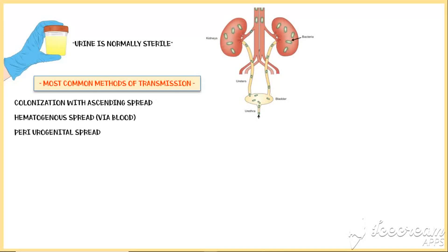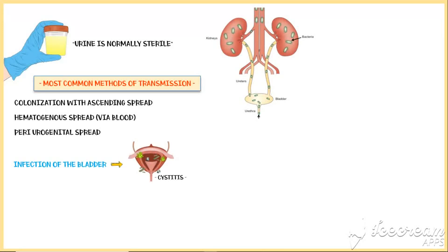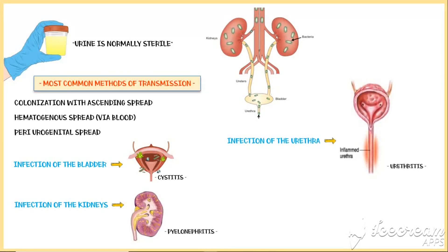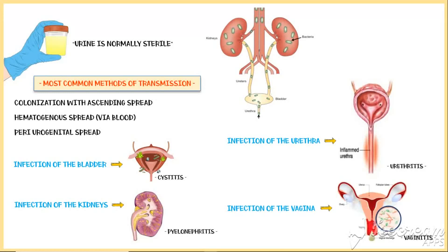UTIs can involve any part of the urinary tract, and infections in different parts are given different names. For example, infection of the bladder is called cystitis, infection of the kidneys is called pyelonephritis, infection of the urethra is called urethritis, and infection of the vagina is called vaginitis.